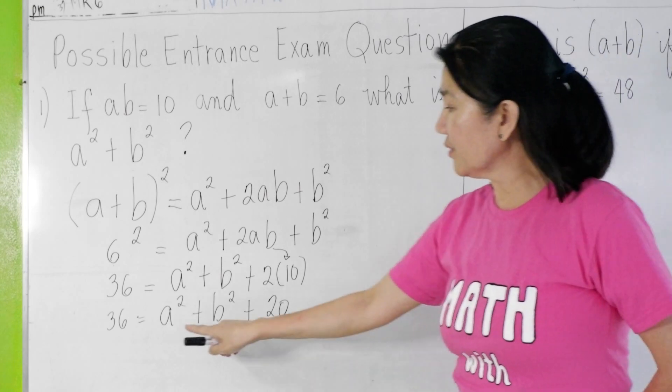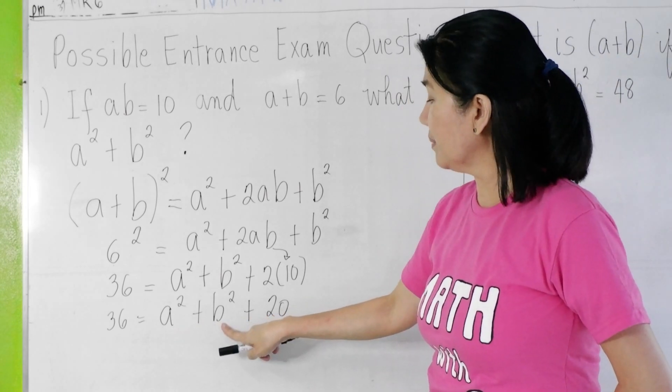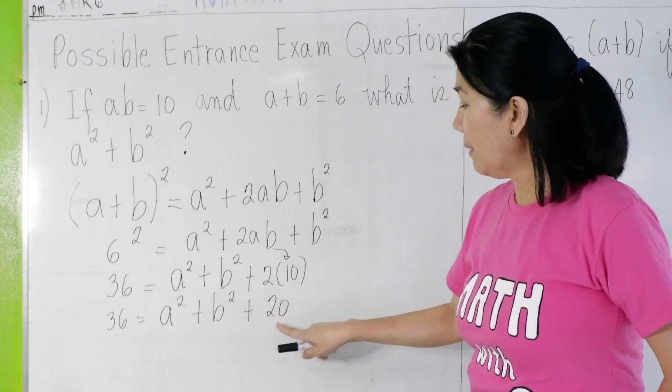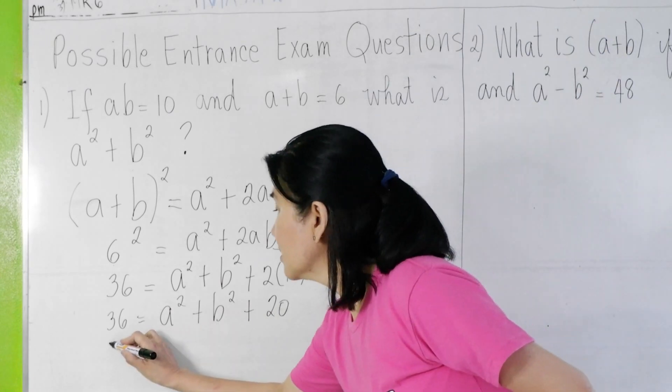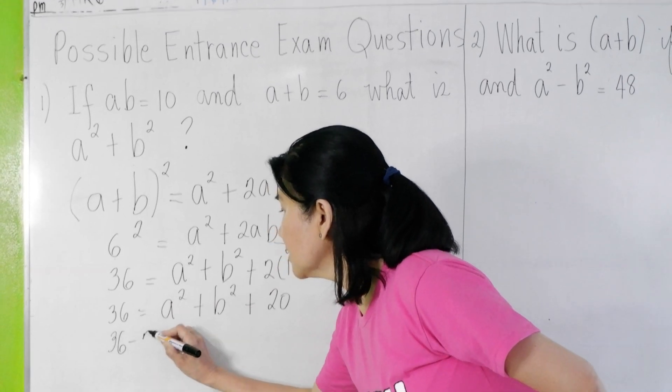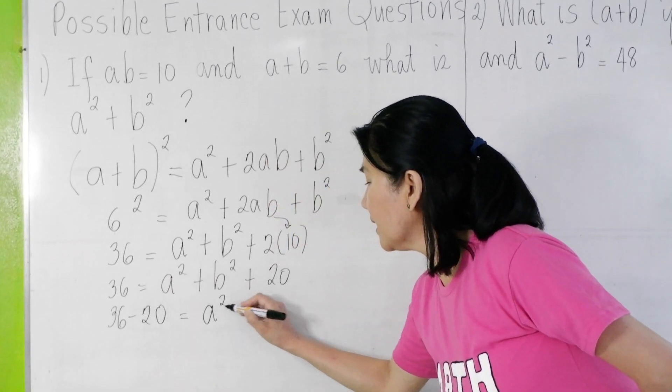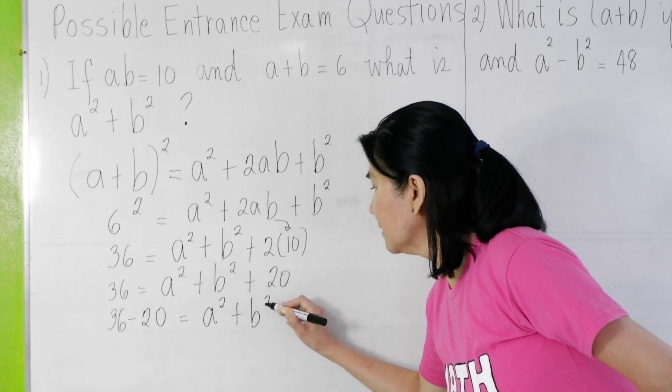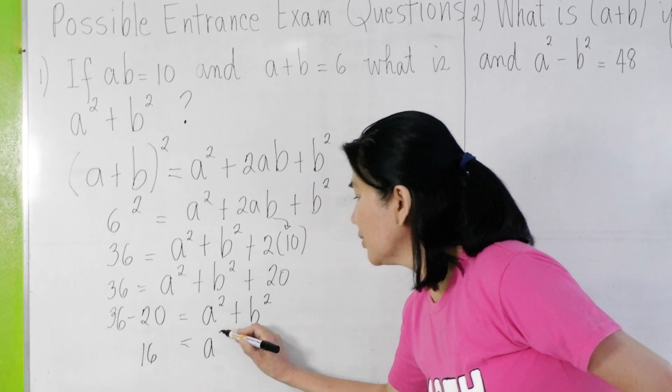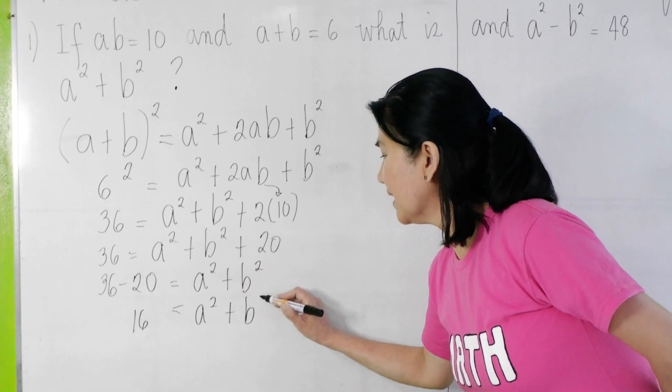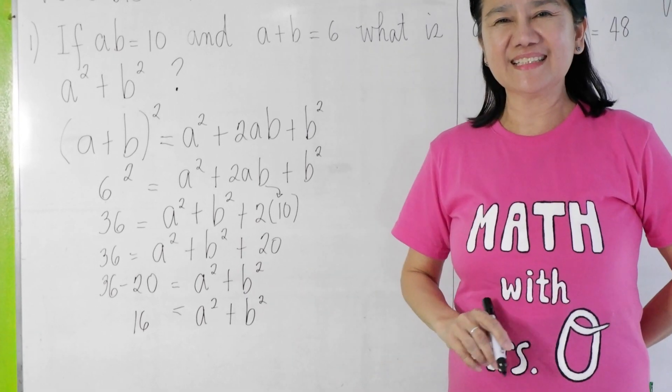Now observe that A squared plus B squared can be isolated here by transposing 20 to the other side. So 36 minus 20 equals A squared plus B squared. Then simplify. 16 equals A squared plus B squared. There, that's it.